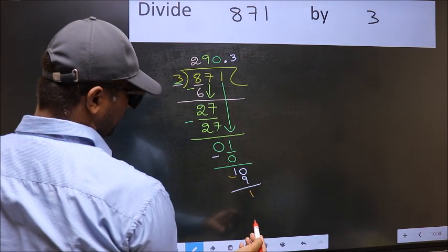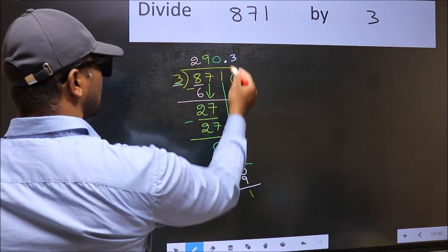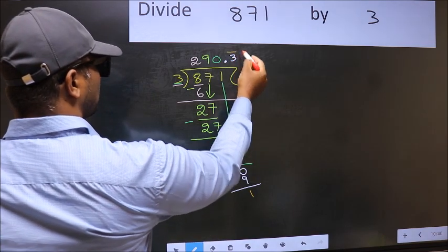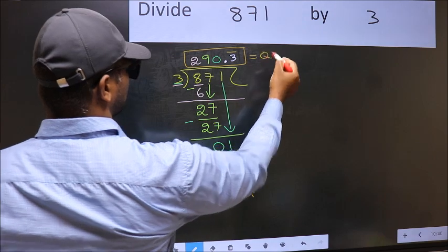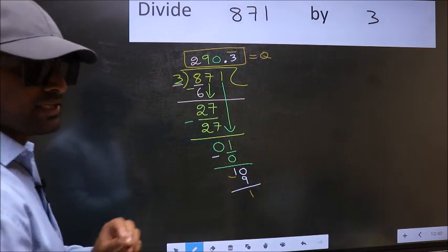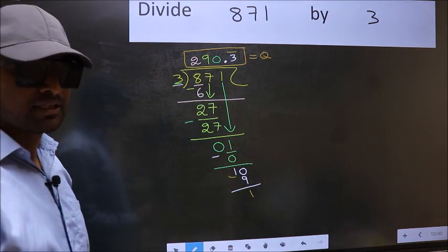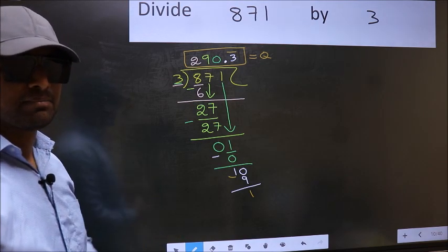We got 1 again. That means we get a bar on this number. So this is our quotient. Did you understand where the mistake happens? You should not do that mistake.